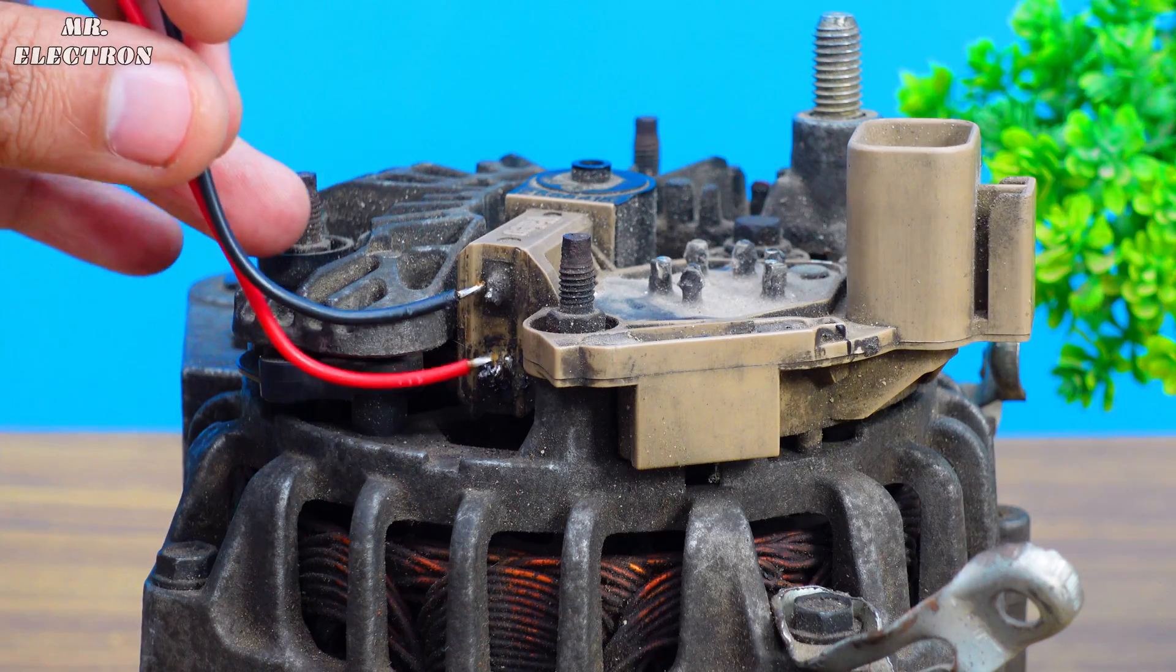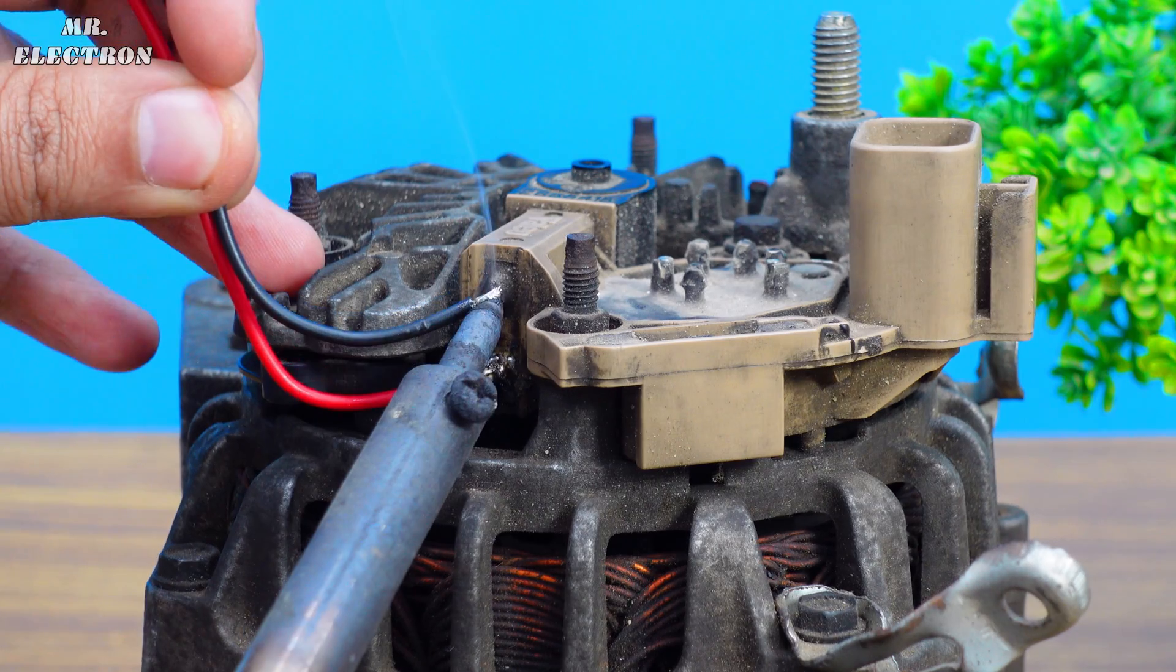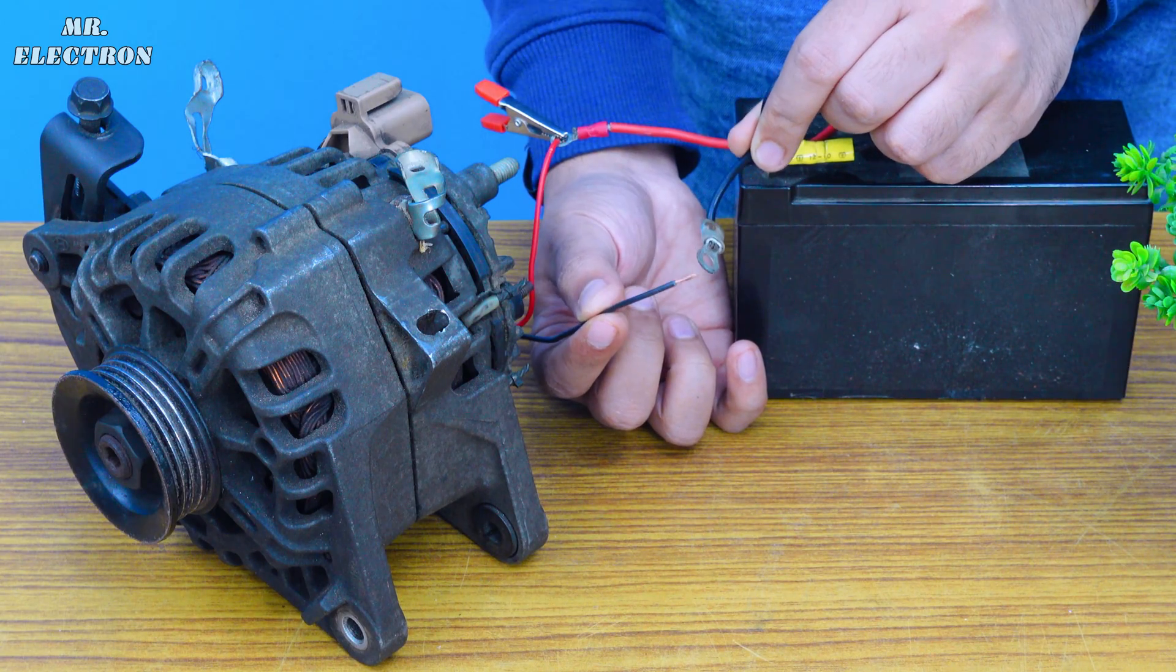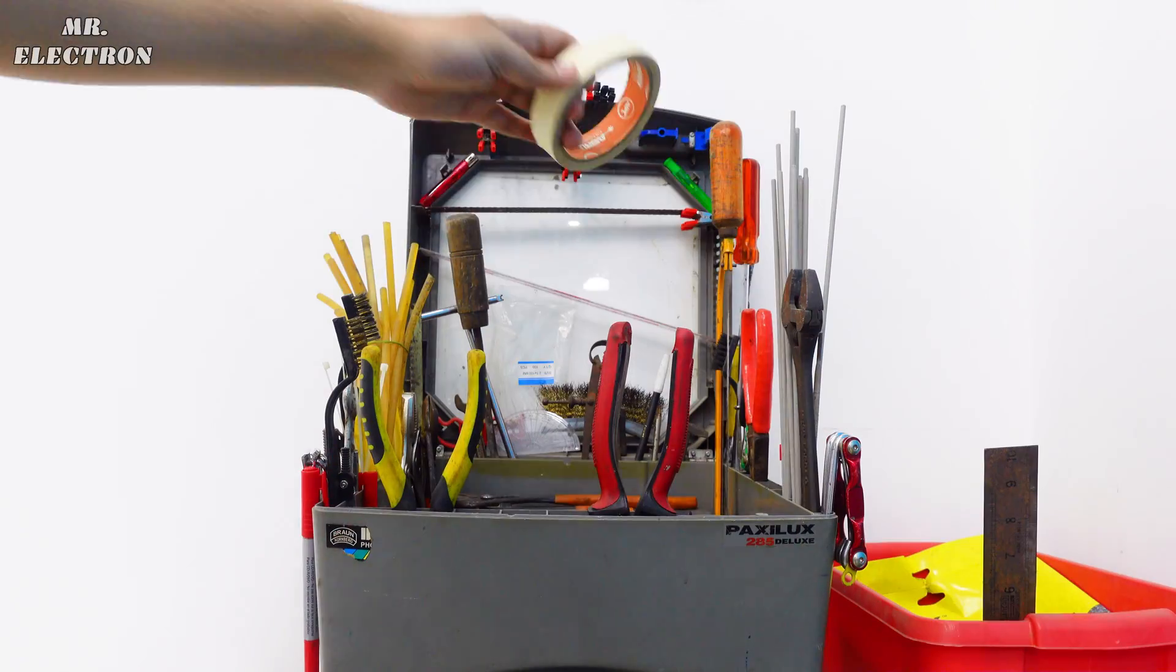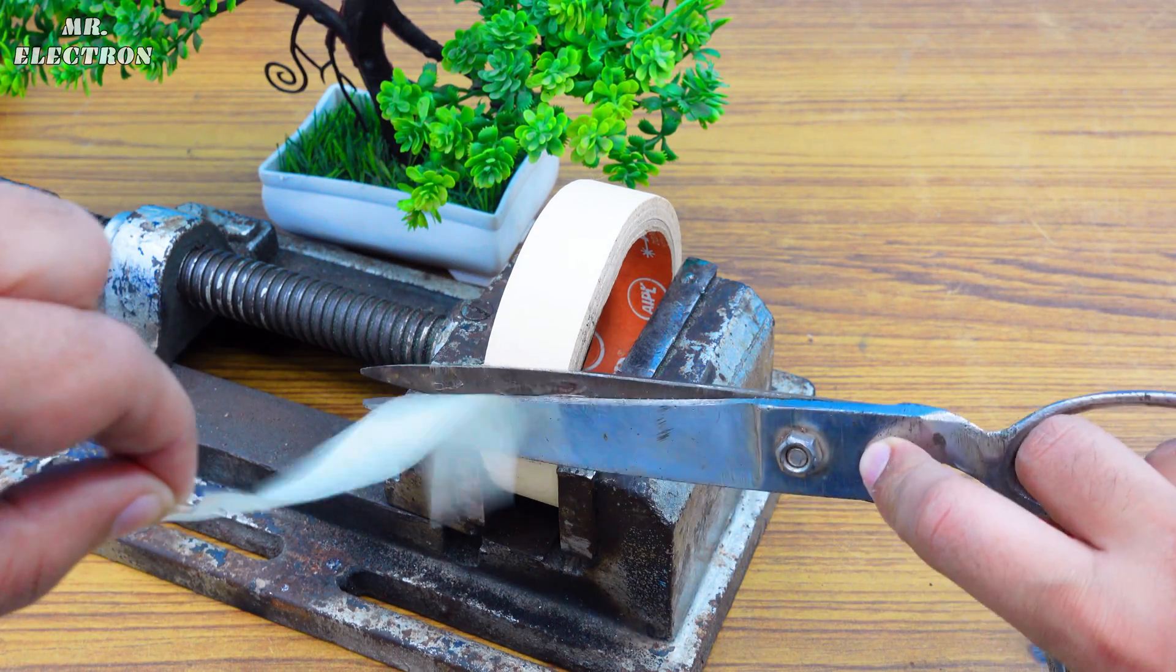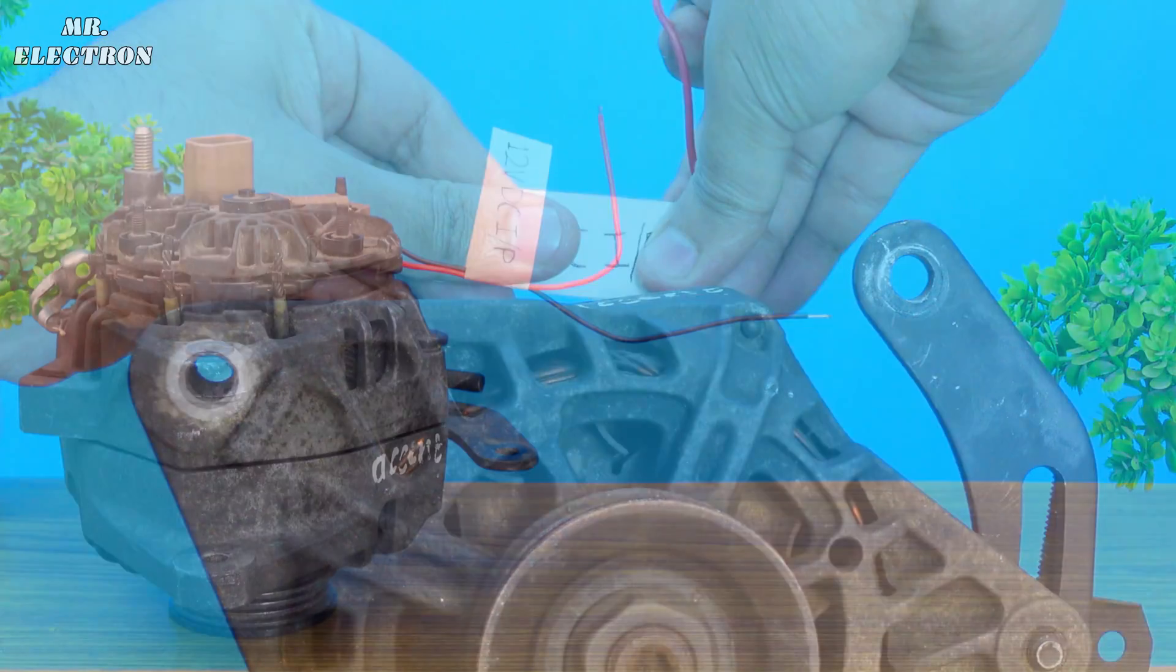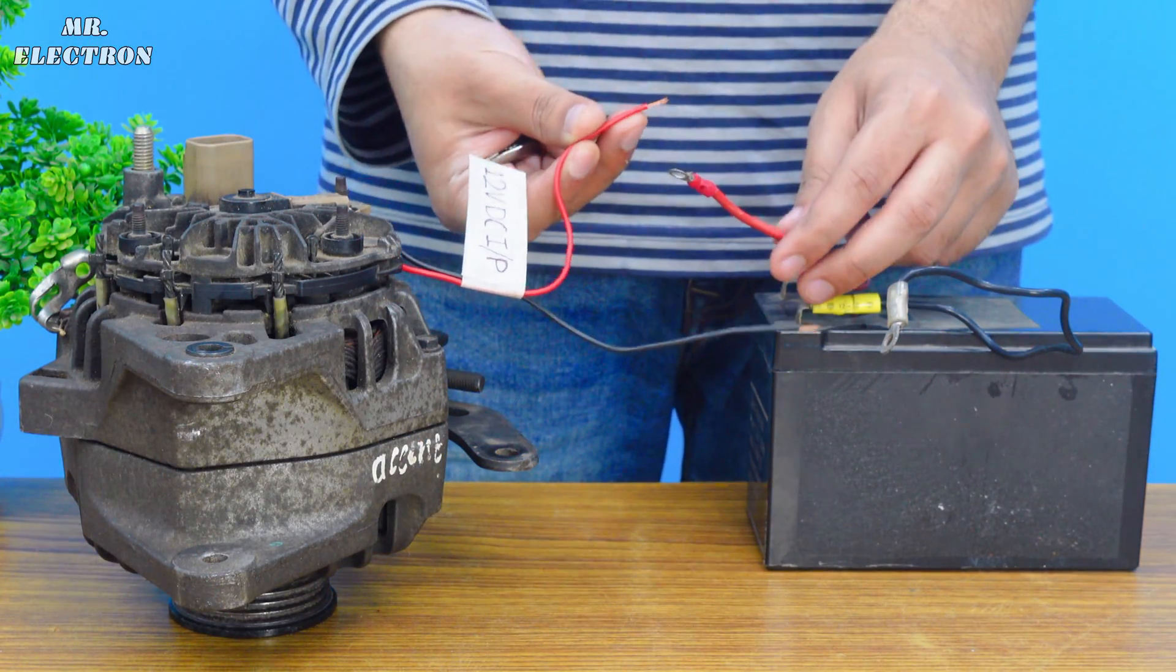The battery wires will be connected here, so let's solder two wires here as red and black. Now let's test it. As you can see it is working, therefore let's take a paper tape, write down 12 volts DC input, tear it and place it on these wires.